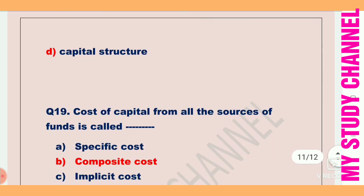Next question: Cost of capital from all the sources of funds is called — option A is specific cost, B is composite cost, C is implicit cost. Option B is the right answer — composite cost is the cost of capital from all the sources of funds.